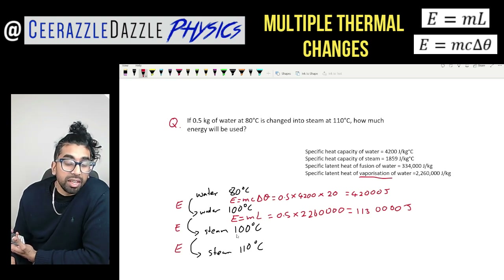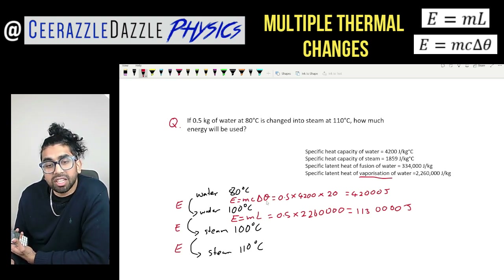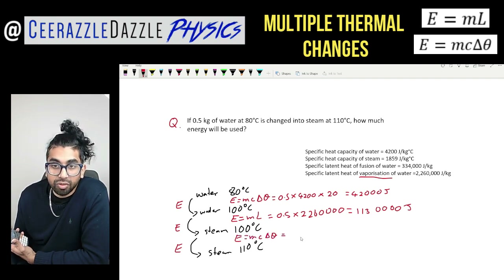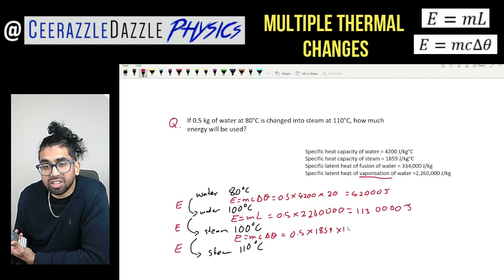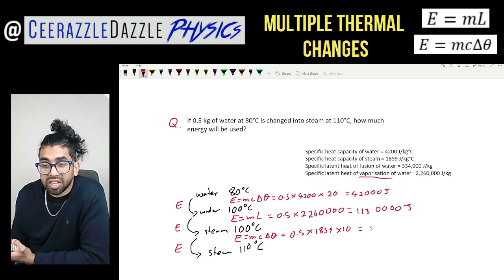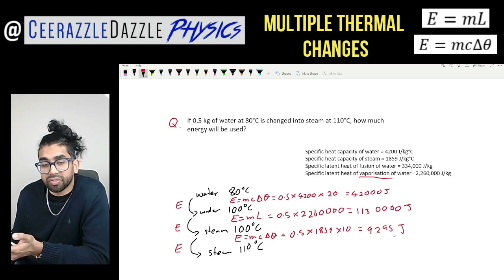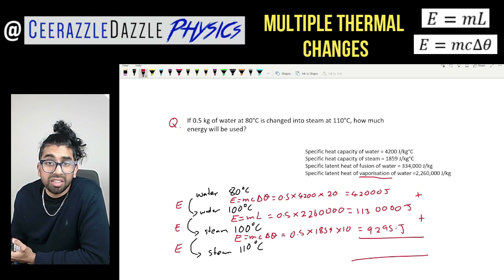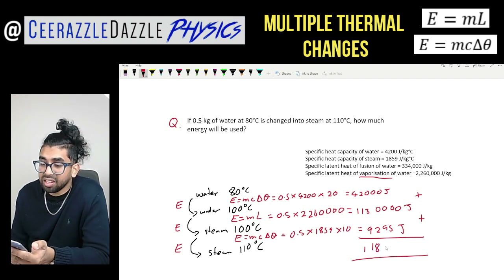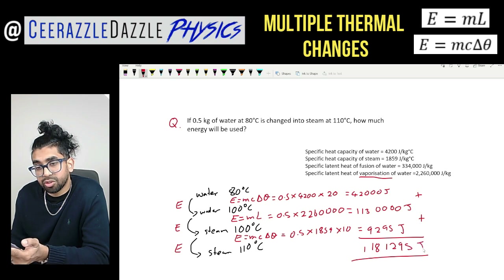For the last transition, we are changing temperature again so we use the specific heat capacity equation: E = mc∆θ. The mass is 0.5 kg, but now it's steam so we use the specific heat capacity of steam, which is 1859 J/kg°C, times by a temperature change of 10 degrees. That gives 9,295 joules. The total energy is the sum of all three: 42,000 + 1,130,000 + 9,295 = 1,181,295 joules.